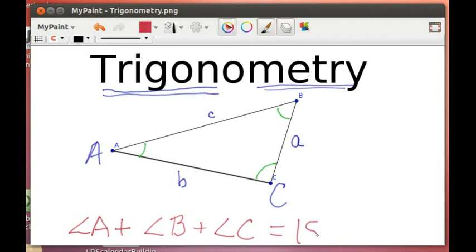We'll use that fact over and over again, and without proof. It'll be kind of an axiom for us. But the sum of the angles in a triangle is 180 degrees.